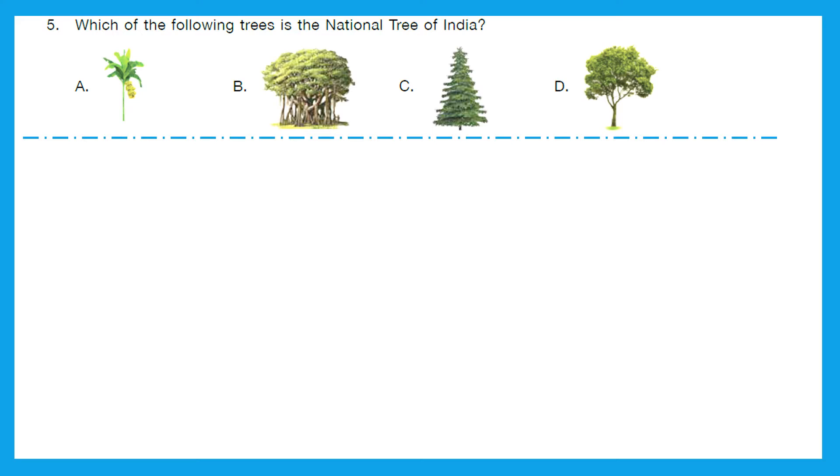Question 5: Which of the falling trees is the national tree of India? And the right answer is option B, Banyan tree.